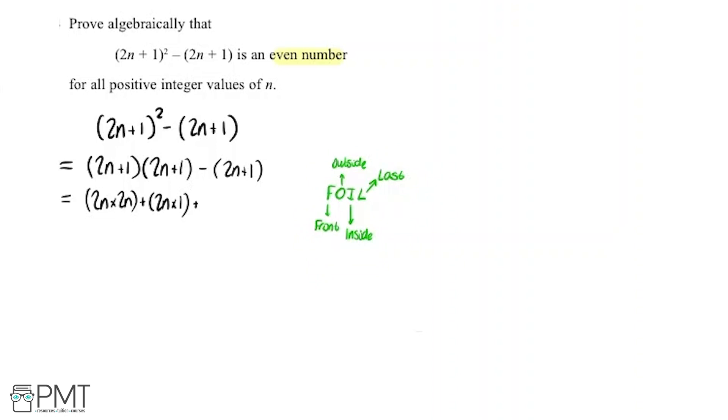So we're going to add on to that. We're now going to be looking at the inside elements. So the 1 here and the 2n here. So multiplying that together we've got 1 multiplied by 2n. And lastly, the L, so the last elements. So 1 and 1. So plus 1 times 1. And again we've still got this minus (2n + 1) here.